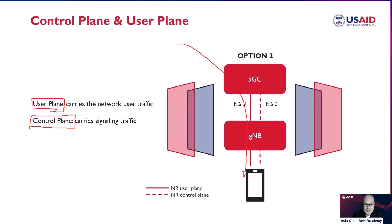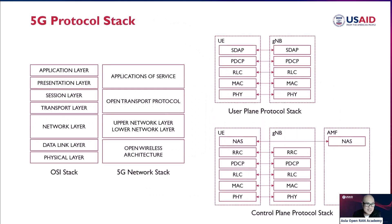That's how the control plane and the user plane are separated. Now, looking at a deeper protocol stack — the 5G protocol stack. You have the OSI layer stack: application, presentation, session, transport, network, data, physical. If you map it to the 5G network stack, you have the application of service, open transport protocol, upper network, lower network, and open wireless architecture.